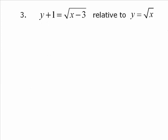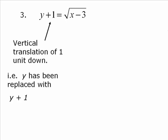Number 3, this will be the last one. y + 1 = √(x - 3) relative to y = √x. So this one has got both horizontal and vertical translations. And I'm going to first take a look at this y + 1. Now I'm not even going to bother isolating the y. I see y + 1 and I know right away that that is a translation of 1 unit in the opposite direction.